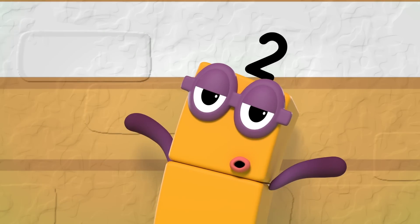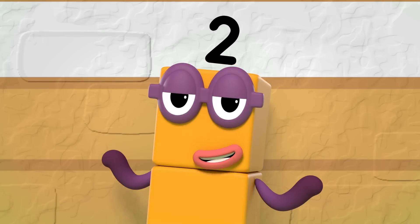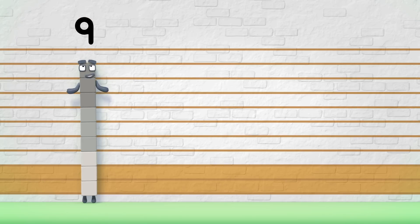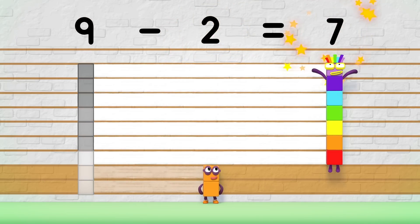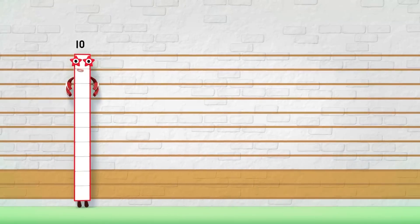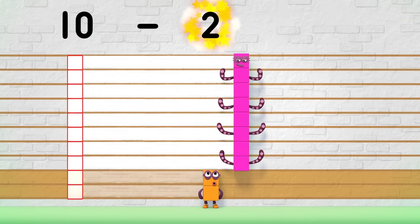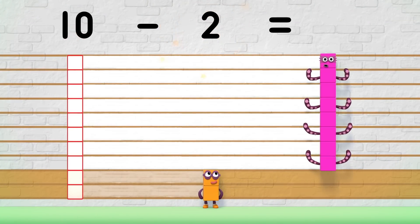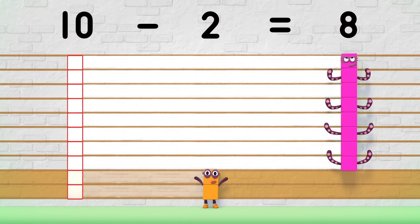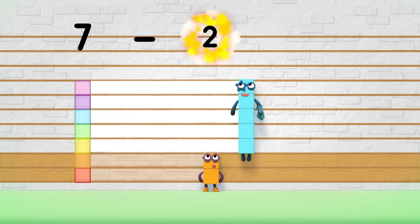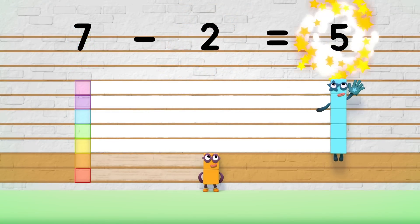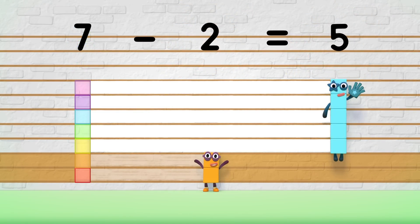So, what's the difference? Nine minus two equals seven. That's the difference. Seven. Ten minus two equals eight. That's the difference. Eight. Nine minus two equals five. That's the difference. Five.